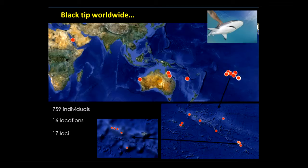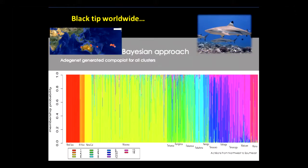What's interesting in the black tip is that we get something completely opposite. We have a study going from the Red Sea basically to French Polynesia, covering almost the overall range of the species. Done on genetic and classical microsatellite analysis. What we find is that overall, every single site — and even within French Polynesia — every single atoll has its own genetic population.